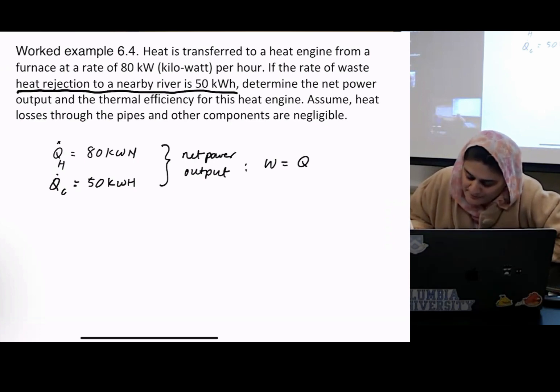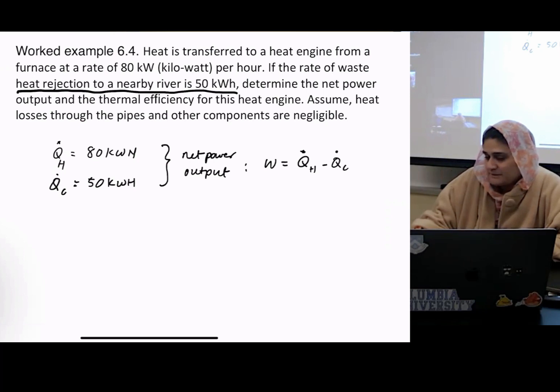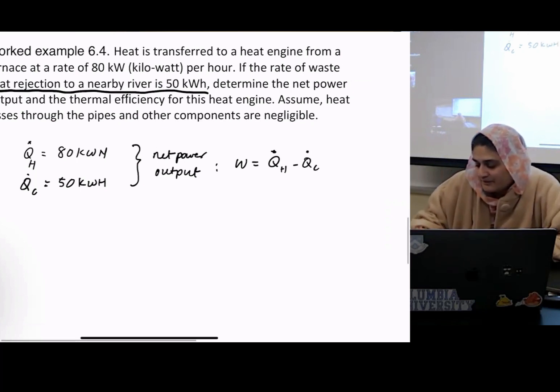How do I find the net power output? Well, plus or minus? What's the answer? 30. 30 what? 30 kilowatt hour.